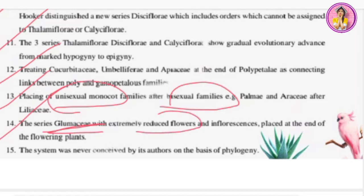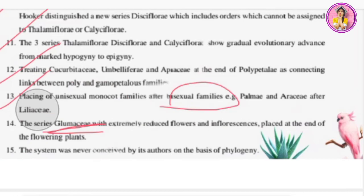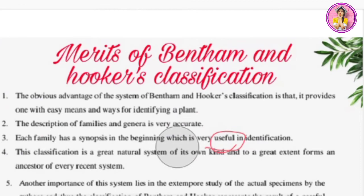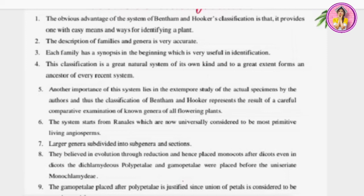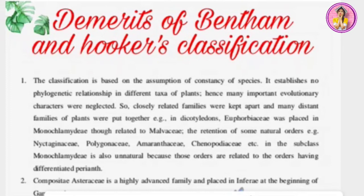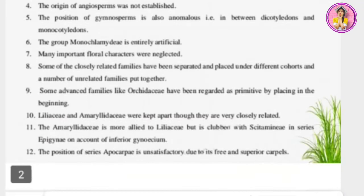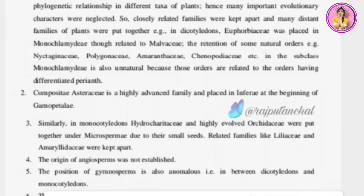The fifteenth point: the system was never intended by its authors on the basis of phylogeny. So that covers all the merits. I hope you understood — most of the merits in Bentham and Hooker are based on their evolutionary belief. Now, for the demerits, there are 12 points here. Don't think that because there are so many merits, there can be no demerits. Imperfection exists everywhere — no one and nothing is perfect, and every subject has exceptions and shortcomings.